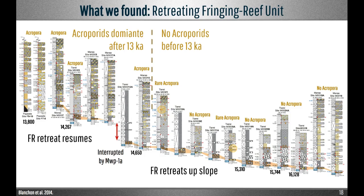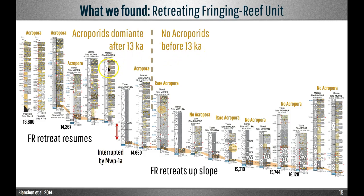When you plot all cores according to the depth of the underlying substrate, you see two things. First, the fringing reef forms a thin, diachronous layer that gradually retreats upslope between 16,000 and 14,000 years ago. When it reaches 106m, it jumps vertically 13m before resuming its retreat — this jump corresponds to the drowning and re-establishment of the fringing reef during Meltwater Pulse 1A. Second, acroporids are absent before 13,000 years, but after that date they dominate the reef front and barrier reef units.